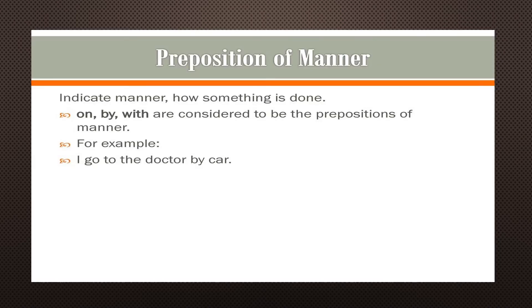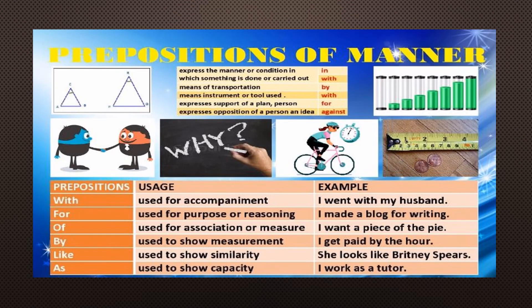Coming to preposition of manner. This indicates manner — that is, how something is done. Examples: on, by, with. I go to the doctor by car. In expresses condition. With tells how something is carried or done. By is used for showing the means of transportation. With is also used to show a means of instrument or tool. For expresses support of a plan or person. Against expresses opposition to a person or idea.